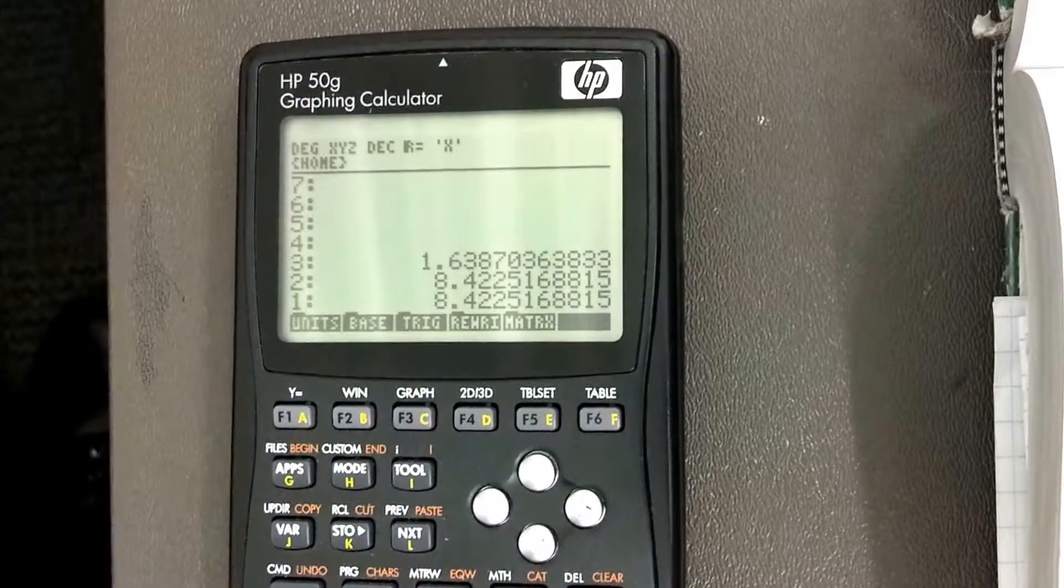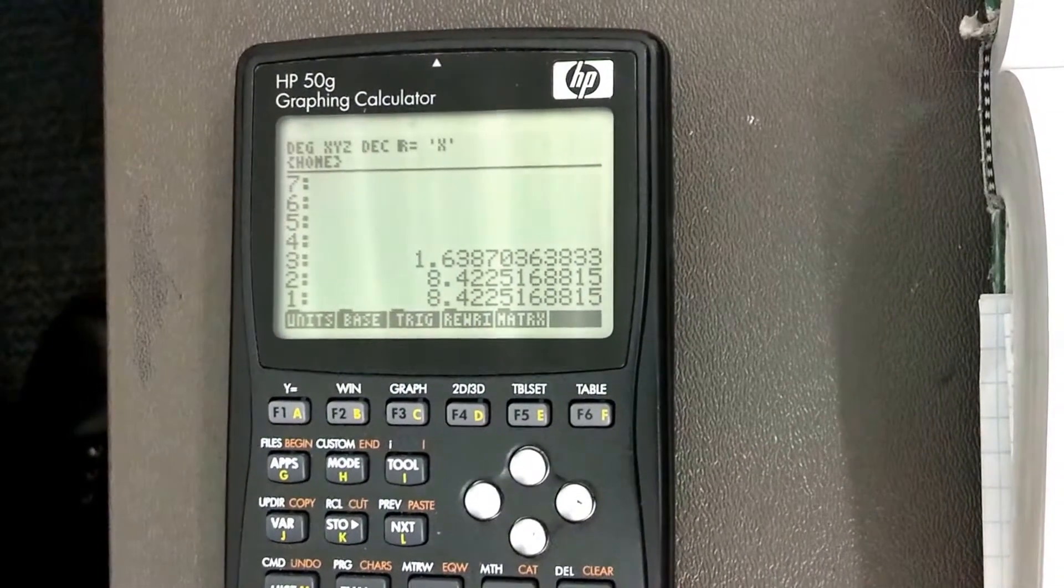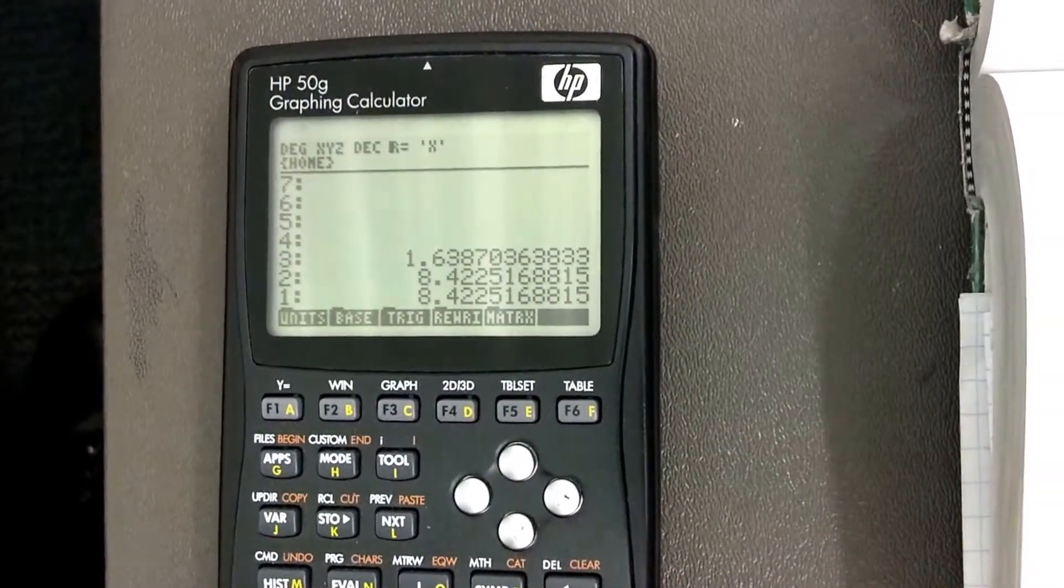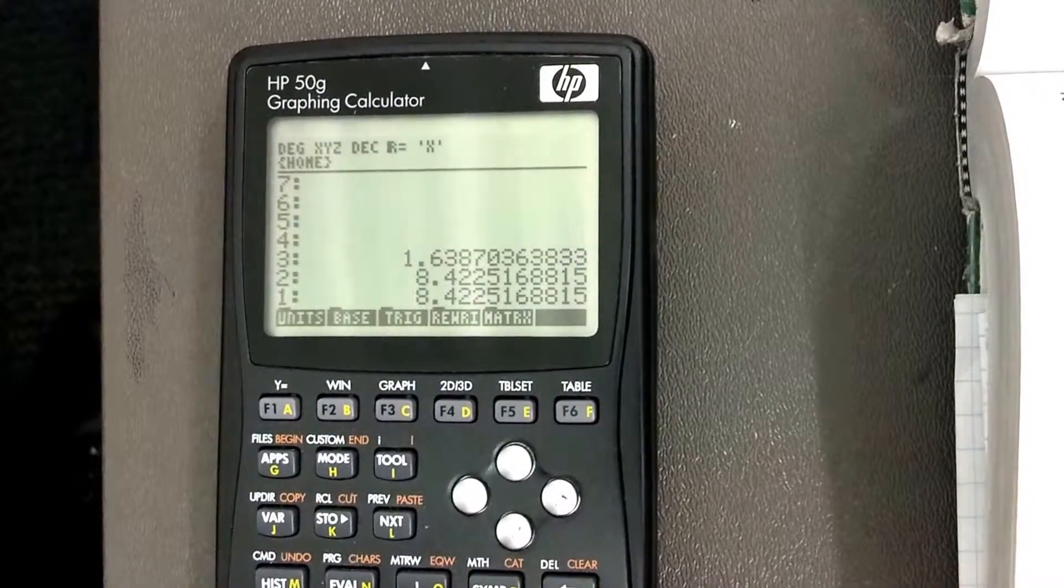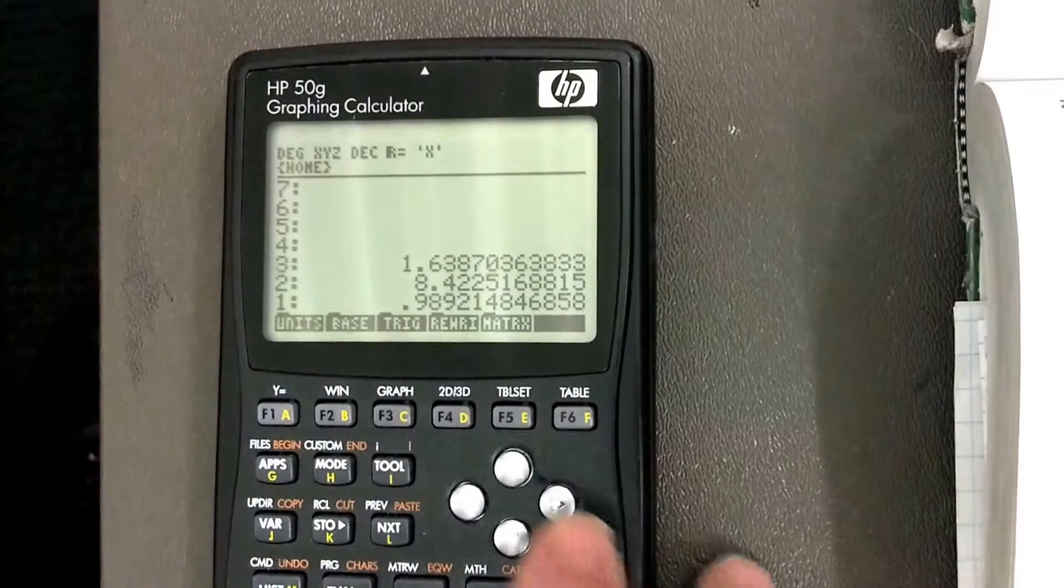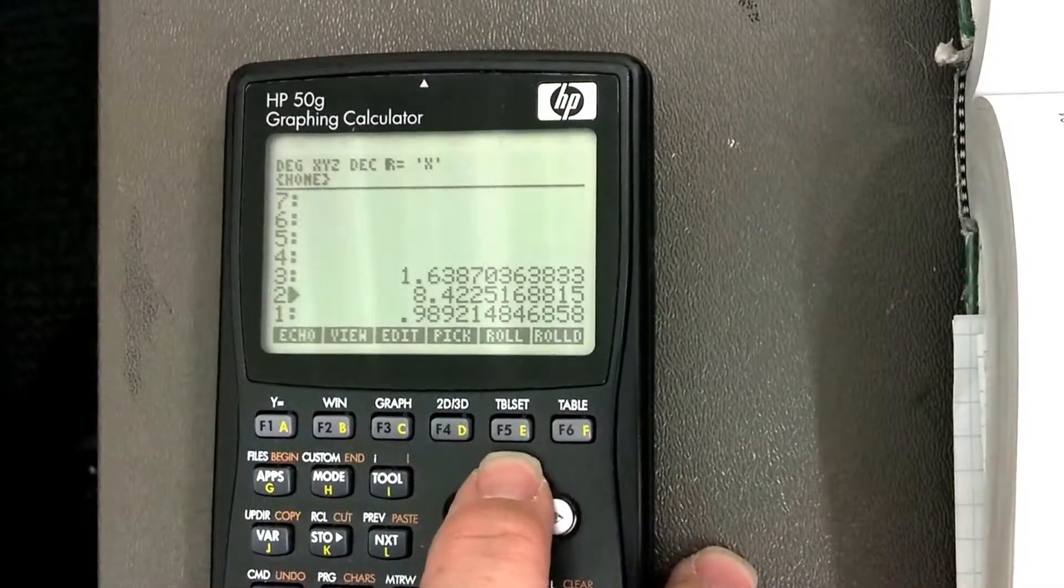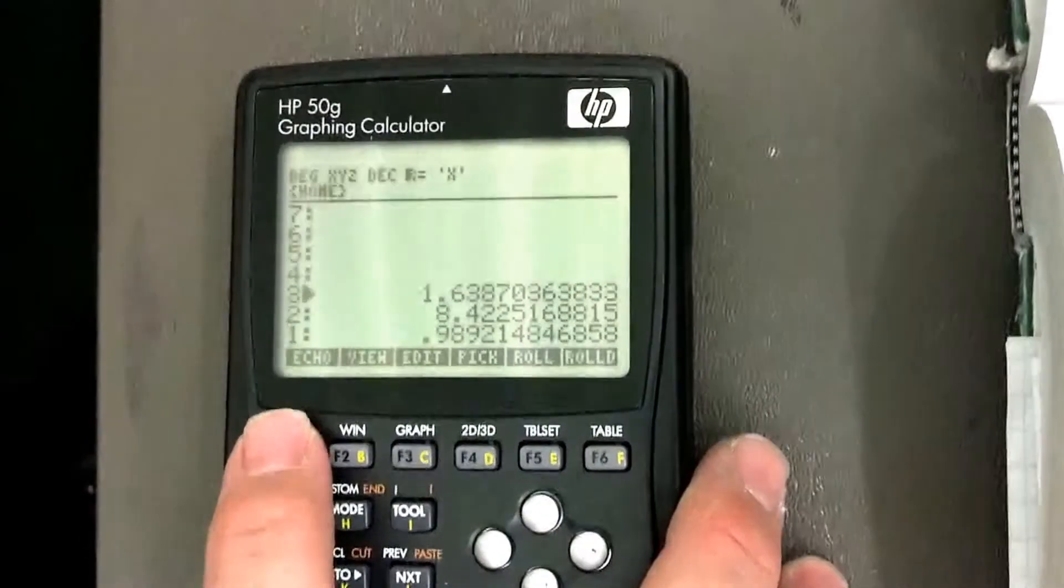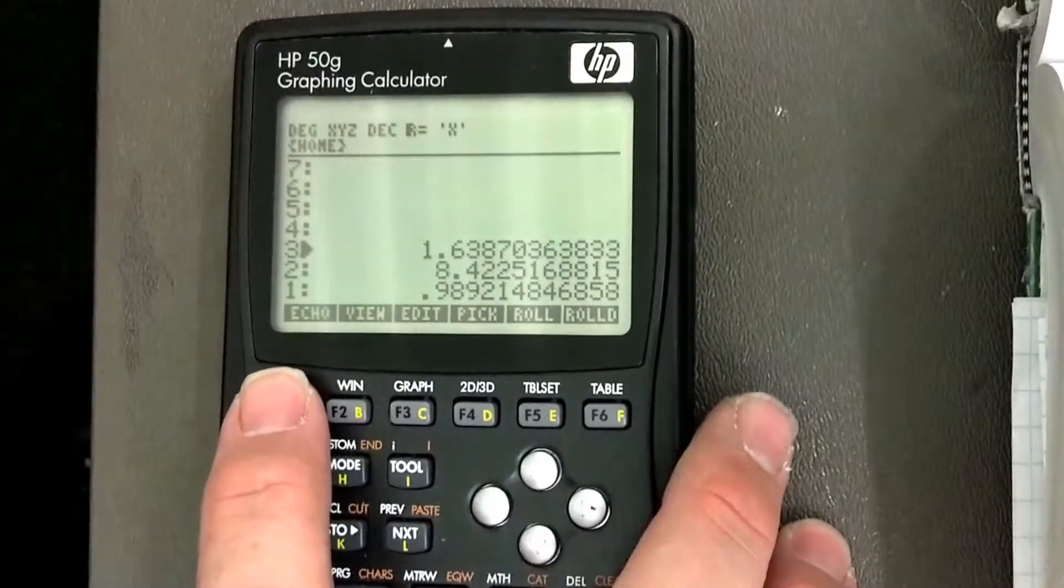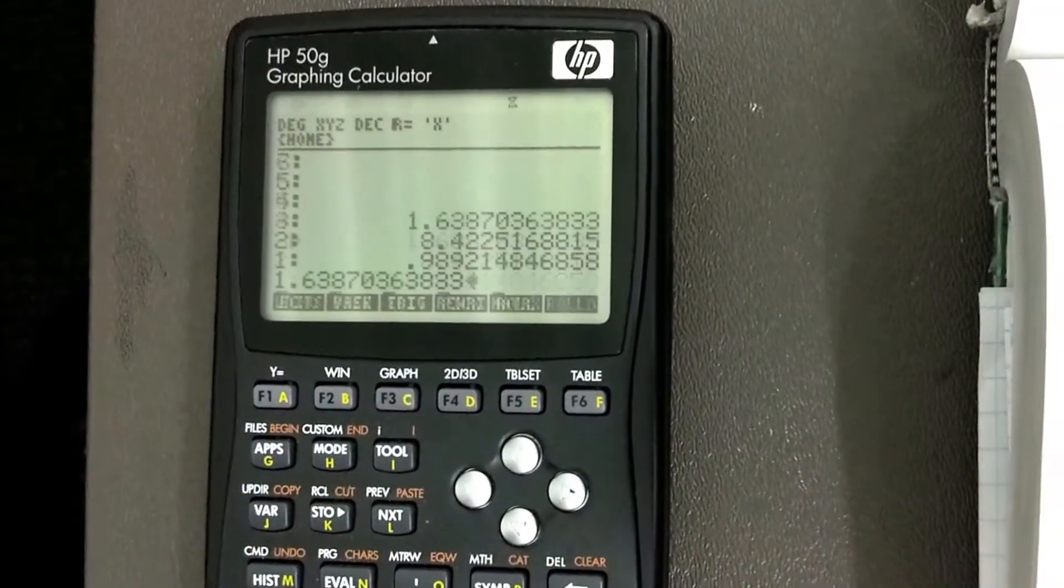And now my real coordinate, my x-coordinate, is the 1.64 times the cosine of the 8.42. So I've got 8.42, so I'm just going to hit cosine. Boom. And now I'm going to come up here, and I'm going to echo the 1.64. Enter.